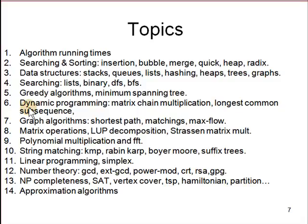Then we'll get to greedy algorithms, with examples like the minimum spanning tree. Dynamic programming is a major topic — examples include matrix chain multiplication, longest common subsequence, and spelling correction algorithms. Another big topic is graph algorithms, starting with easier ones like shortest path, matching, and max flow, with more complex ones later.